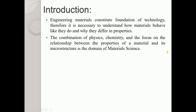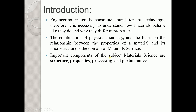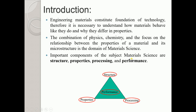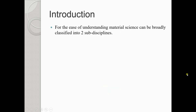The important components of the subject material science are structure, properties, processing, and performance — these are the four important components. If you see this triangular diagram carefully, we have structure, properties, and processing. We study structure, properties, and how the processing of materials is done — all in order to improve the performance of that particular material and carry on technological development.